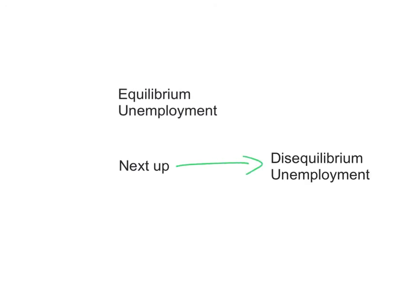What we've discussed so far is the concept of equilibrium unemployment. When the labor market is in equilibrium, there's still some unemployment — those are the structural, seasonal, and frictional components that make up the natural rate of unemployment. Next up will be disequilibrium unemployment. See you at the next video.